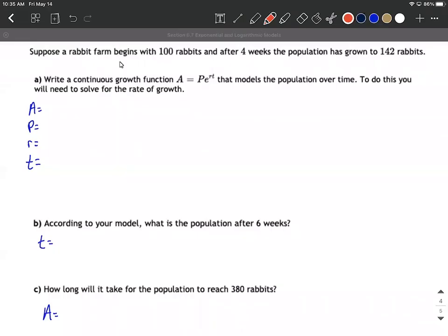All right. Exponential growth modeling. So we have a rabbit farm. Start with 100 rabbits. Four weeks later your population is 142 rabbits.